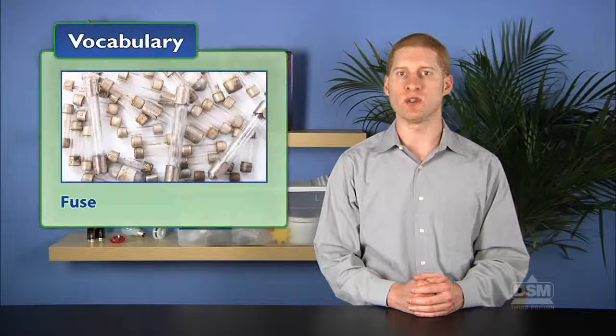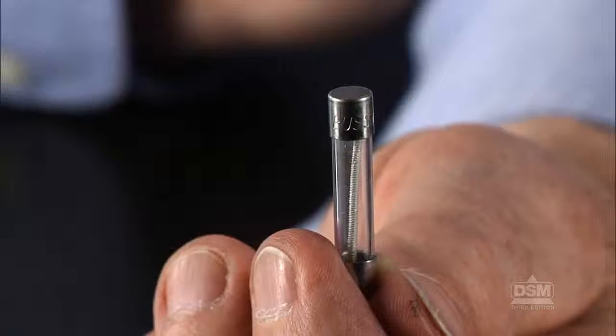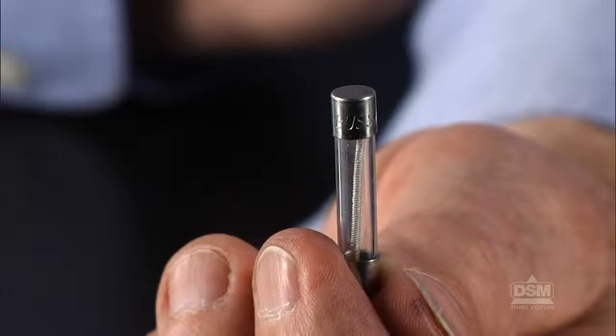Inform students that a fuse contains a thin wire or other conductor that is designed to break if too much current flows through it. When the wire inside a fuse melts and breaks, the circuit that the fuse is placed in is opened and all electric current stops flowing through the circuit.